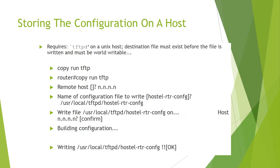Storing the configuration on a host. Run tftpd on a Unix host, or simply type tftp server in Windows. This initial point must exist before the file is written and must be world writable. Use 'copy run tftp'. Router# copy run tftp. Enter the remote host IP address and the name of the configuration file to write: /usr/local/tftpd/hostel-rtr-config.